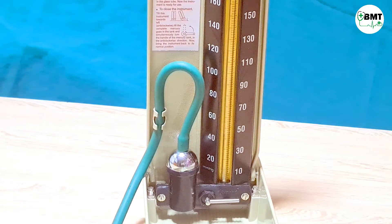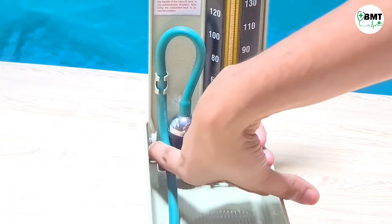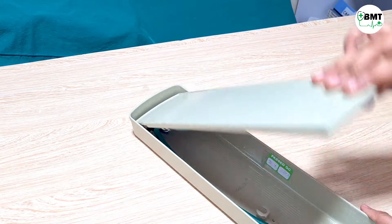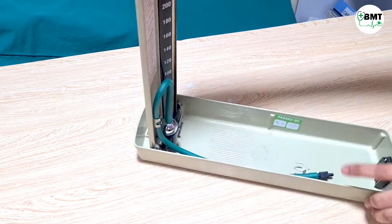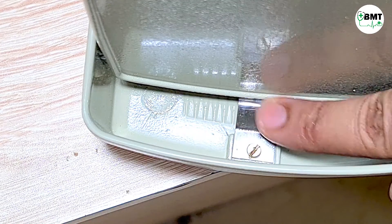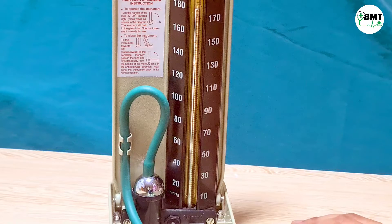If this hinge is broken, then it can be replaced. That part is easily available in the market. If this flap is not closing properly or fixing not properly, then tighten this screw and make sure that this curve is facing upward.